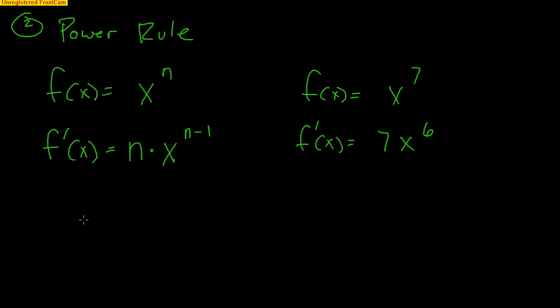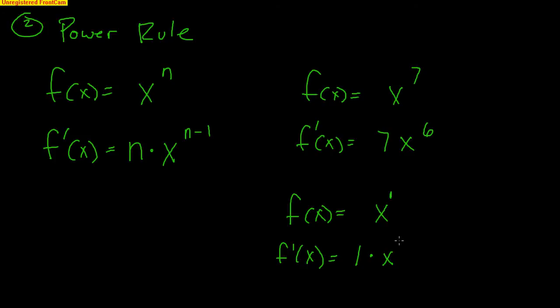This leads us to the derivative of just x. Remember, the exponent of x is one. So when we find the derivative, that one falls down in front, and our new exponent is one minus one, which is zero. Now, x to the zero is one, so one times one is always one. The derivative of x is simply one — x to the zero is always going to be one no matter what x is, so one times one is one.